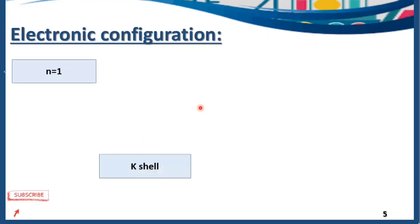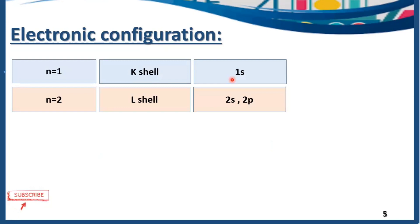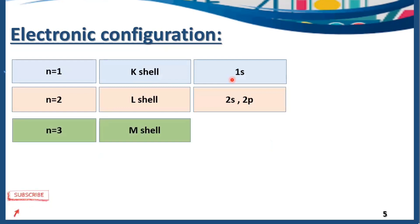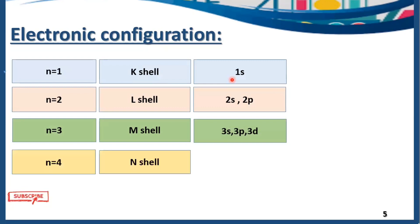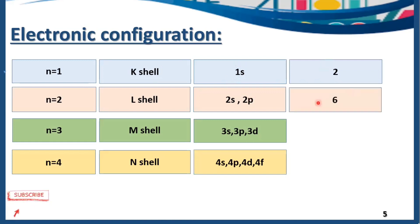If n equals 1, it is the K shell, which has only one subshell: 1s. If n equals 2, it is the L shell, with two subshells: 2s and 2p. If n equals 3, it is the M shell, with subshells 3s, 3p, and 3d. If n equals 4, it is the N shell, with four subshells: 4s, 4p, 4d, and 4f. In the s subshell we can accommodate 2 electrons, in p we can accommodate 6, in d we can accommodate 10, and in f we can accommodate 14 electrons.